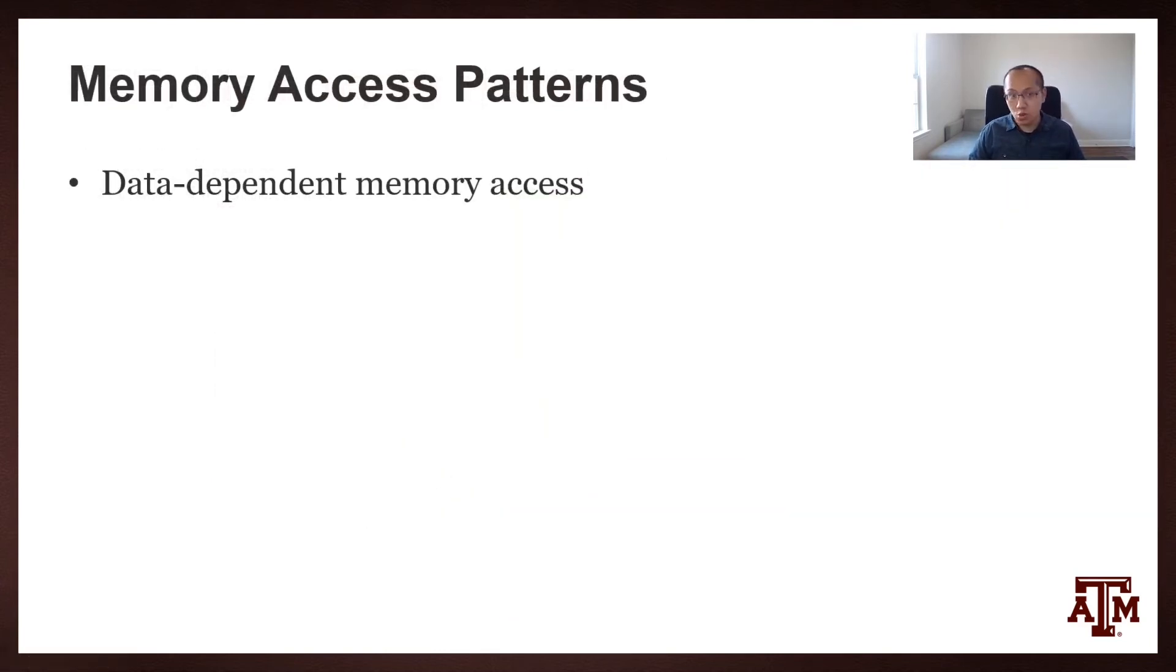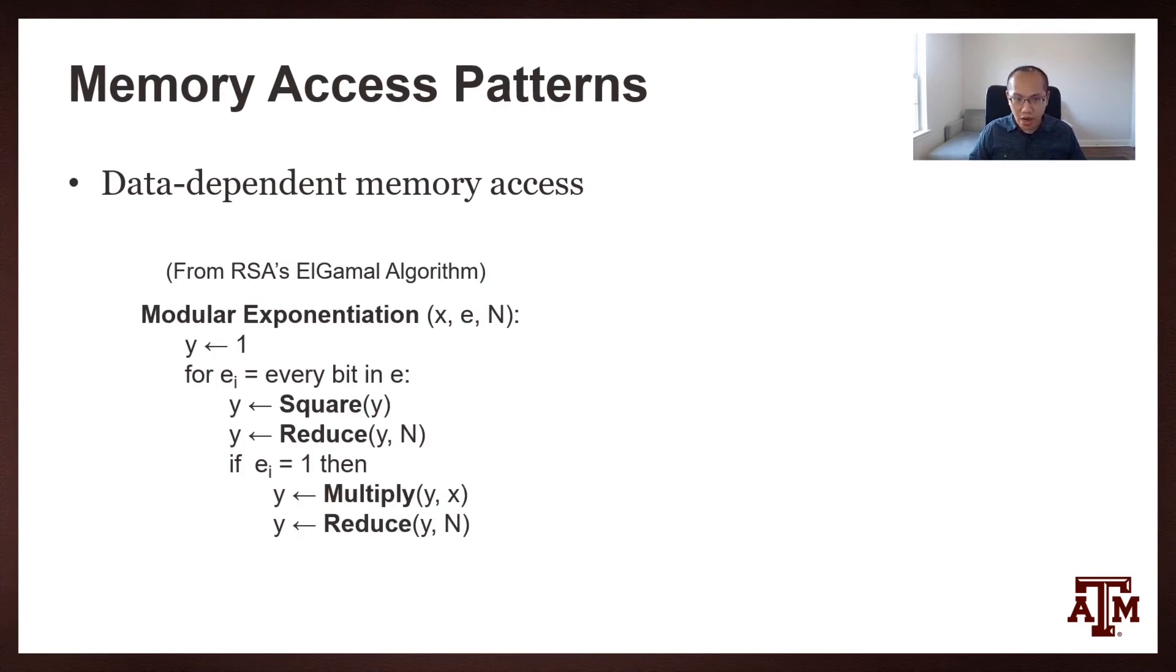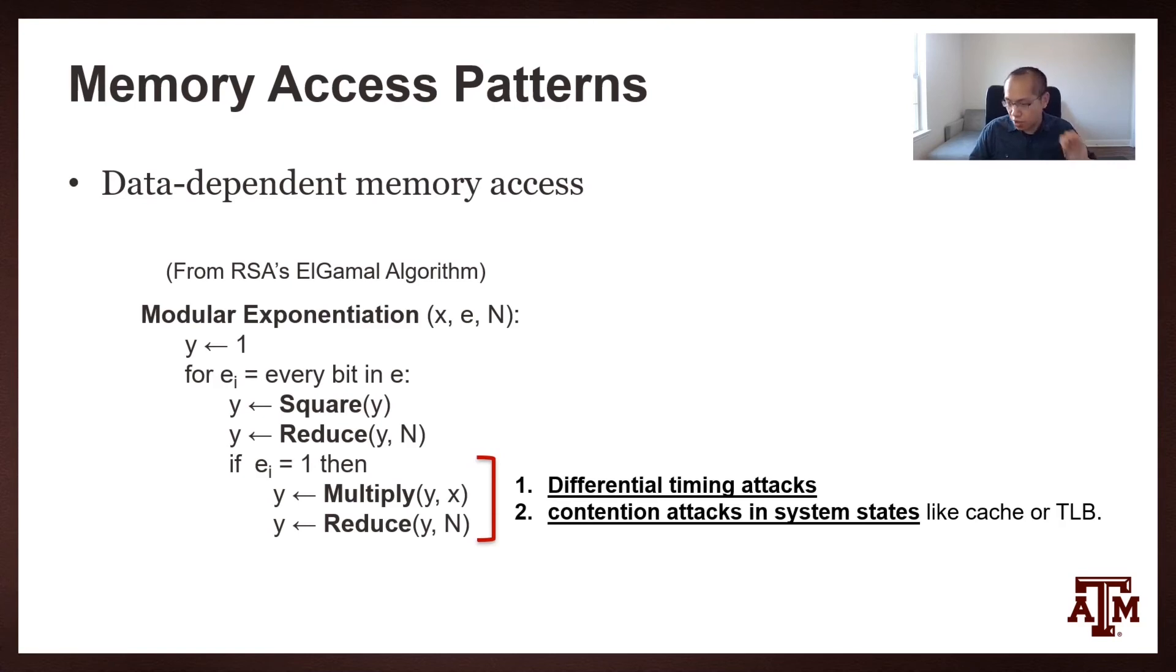Both secure computations and TE with memory protection could potentially have the issues of memory access patterns. In these cases, you have data-dependent memory accesses that can leak the content of memory through the location that the memory has been read or written. One classic example is RSA's algorithm. For example, based on different bits within the key, different functions will be called. When the bits was zero, only square and reduce will be called. When the bit was one, there were four functions: square, reduce, multiply, and reduce will be called. In these cases, based on observing these patterns, you can either have a differential timing attack by observing different latencies occurring in the system. Or you can have contention attacks in system data like caches or TLB.